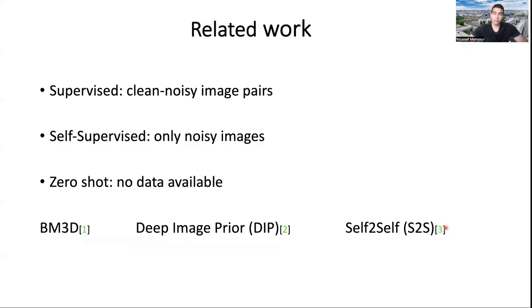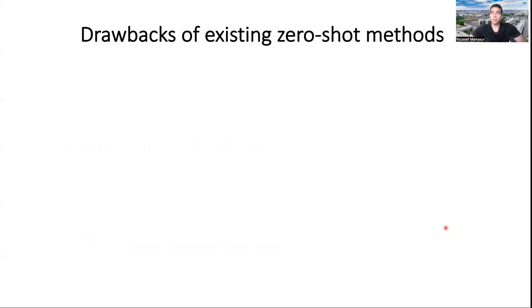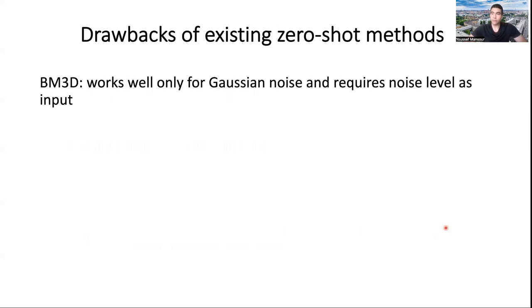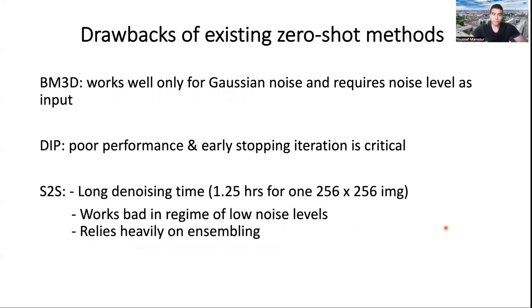Current zero-shot methods are BM3D, Deep Image Prior, and Self-to-Self. Let's check the drawbacks of the existing methods. BM3D is tailored for Gaussian noise, which means it's not going to work well for other distributions, as we will see later in the experiments. Deep Image Prior has poor performance and has a hyperparameter, which is the early stopping iteration. It's very critical for the performance and it's hard to determine in advance. Self-to-Self works very well, but requires very long denoising times. It takes more than one hour on a GPU to denoise a relatively small image. It also works badly in the regime of low noise levels, as is the case with all blind spot networks.